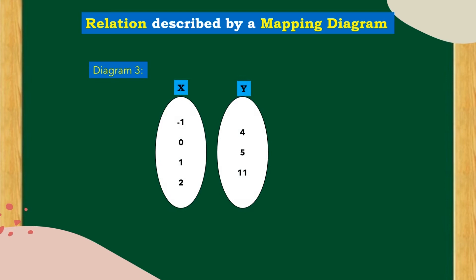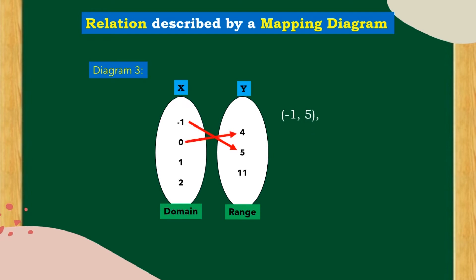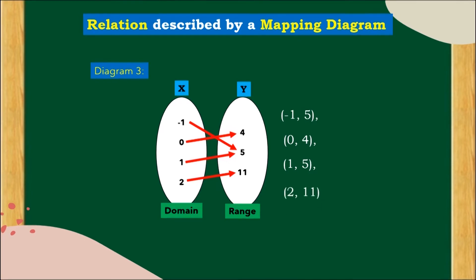Diagram 3 has x-coordinates as the domain and y-coordinates as the range. Make an arrow to form the pairs: (negative 1, 5), (0, 4), (1, 5), and (2, 11). This type of relation is a many-to-one correspondence, meaning many domain values map to one range value.